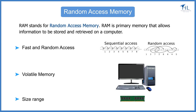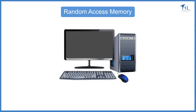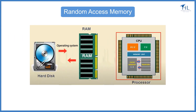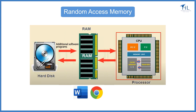The RAM size ranges from 1 GB to 128 GB. When the computer boots, parts of the operating system and drivers from the hard drive are loaded into the RAM, which allows the CPU to process instructions faster and speed up the boot process. After the operating system is loaded, programs we open, like MS Word, browser, etc., are also loaded into RAM.